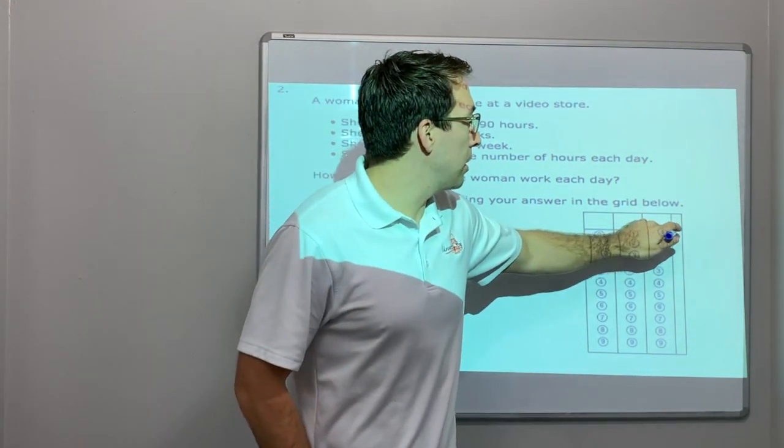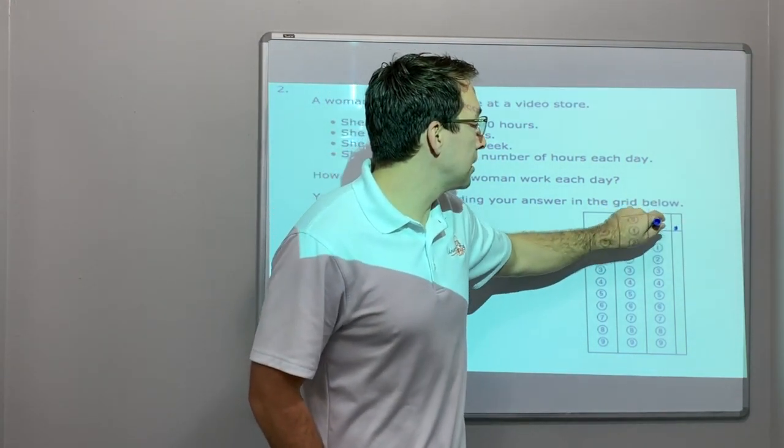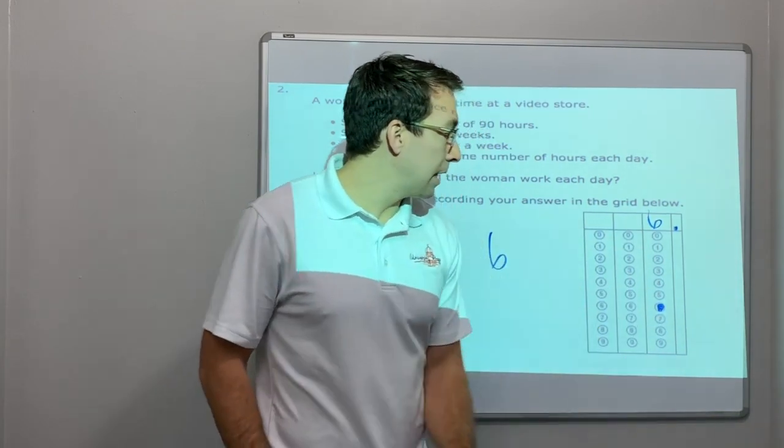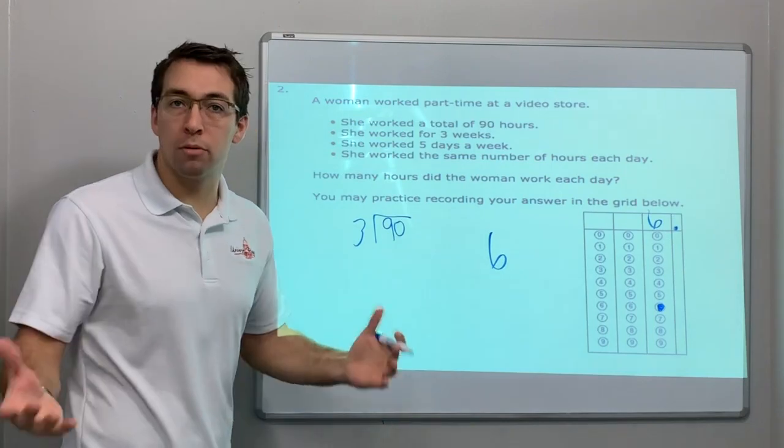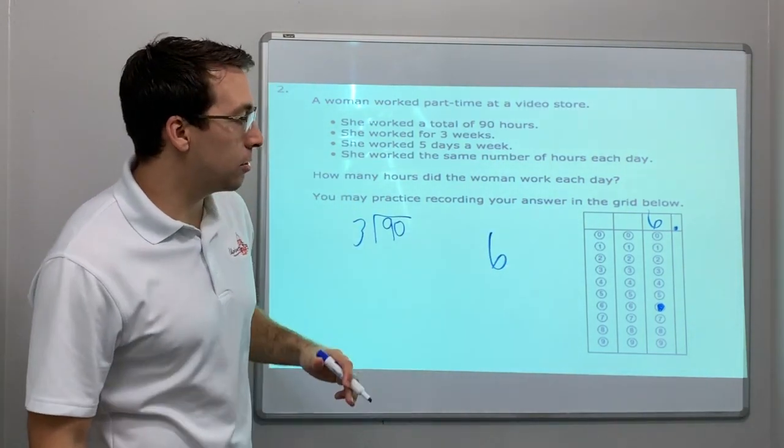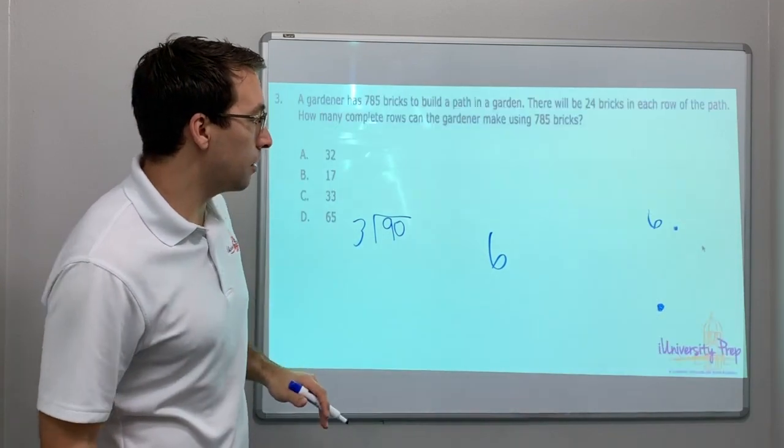Look, here's the decimal. So we know that six is in the ones place. Six. We can bubble six right here. That is how you answer the bubble question. That's it. It's the exact same problem, but I wanted to show you how to answer it in the grid and the bubble.